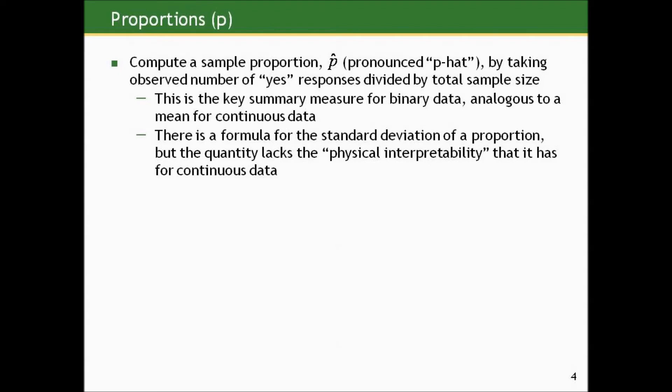Computing a sample proportion as our summary measure — this is frequently represented by the letter P with a caret or hat on top, pronounced P-hat. The hat indicates it's an estimate. We compute a sample proportion by taking the observed number of yeses in our outcome divided by the total sample size.